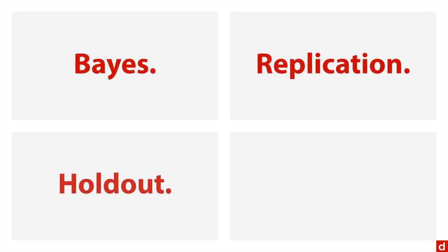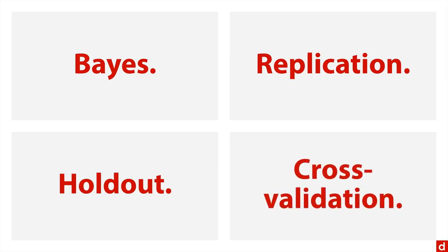Now there are a few general ways of dealing with this and trying to get some sort of generalizability. Number one is Bayes, a Bayesian approach. Then there's replication, then there's something called holdout validation, and then there's cross validation. I'll discuss each of these very briefly in conceptual terms.